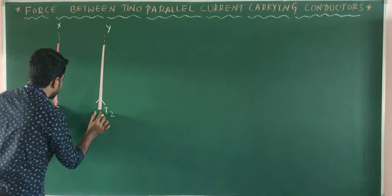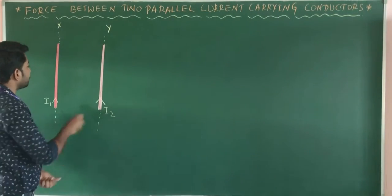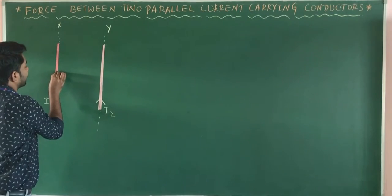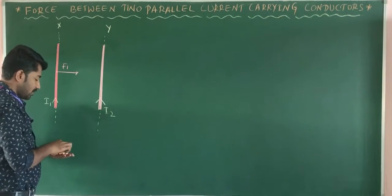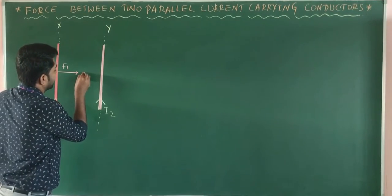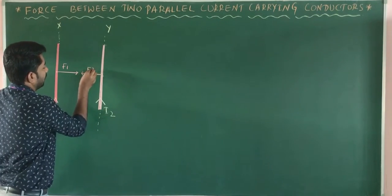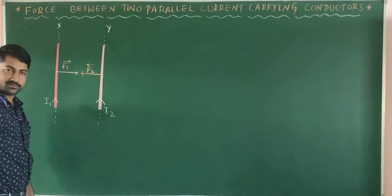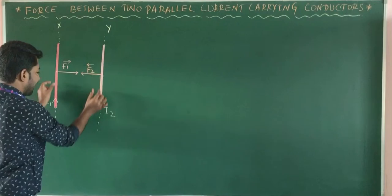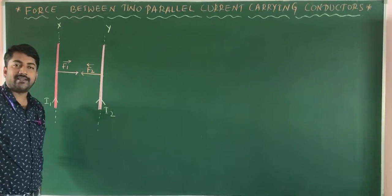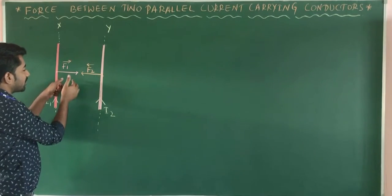When the current is flowing in the same direction in both long straight parallel current-carrying conductors at the same time, the force F1 acts on conductor X and force F2 acts on conductor Y. These forces are directed towards each other, meaning these two conductors are attracted towards each other when current flows in the same direction.